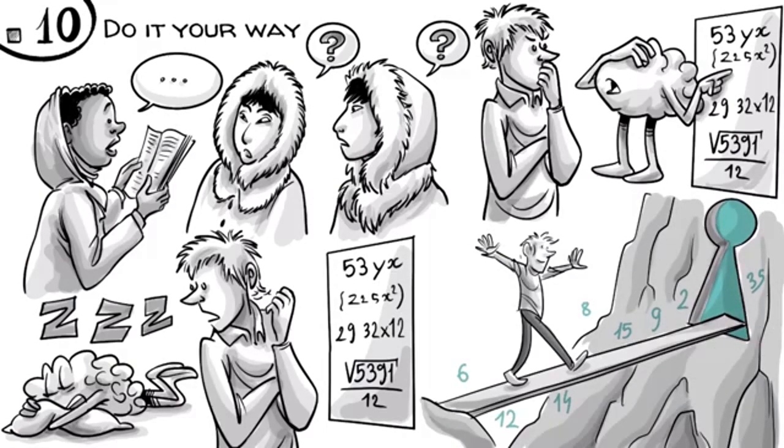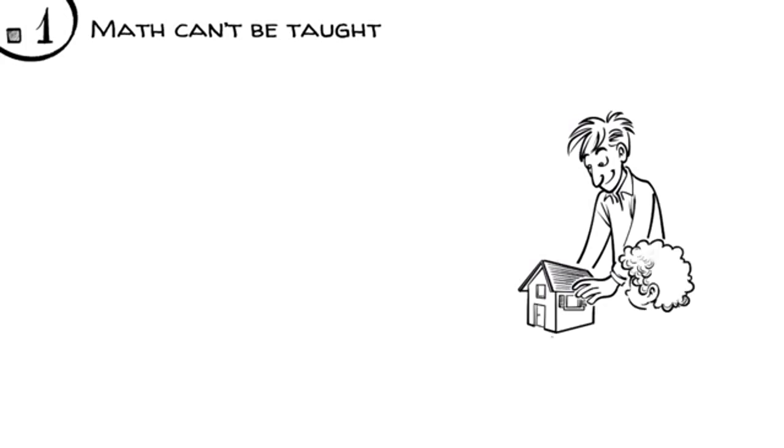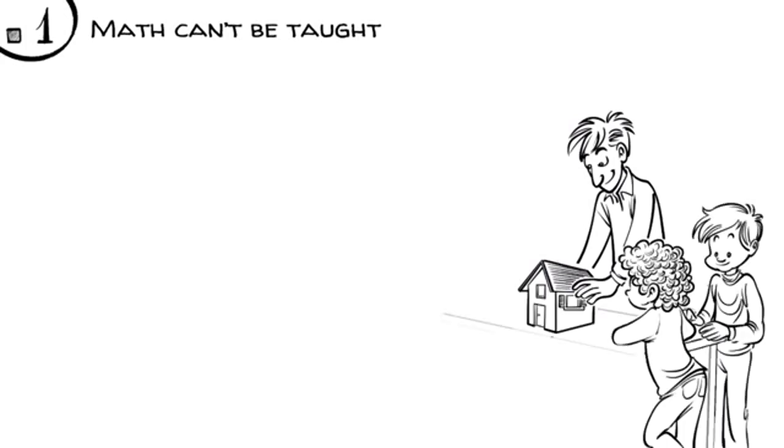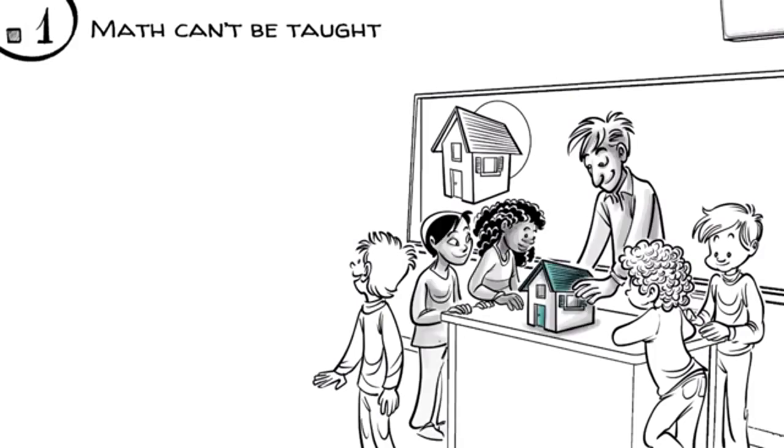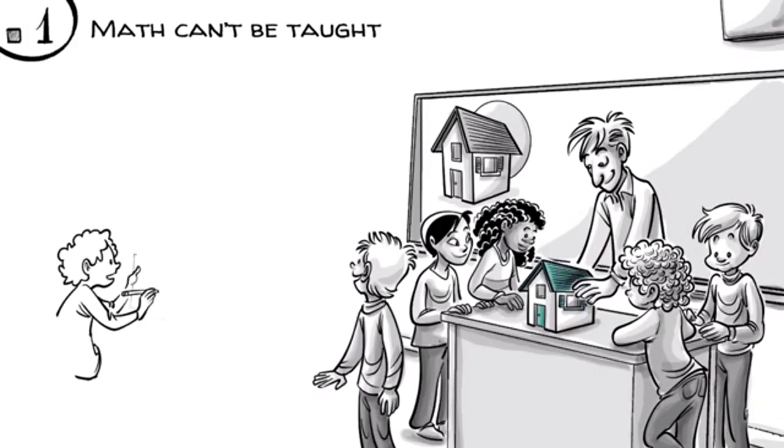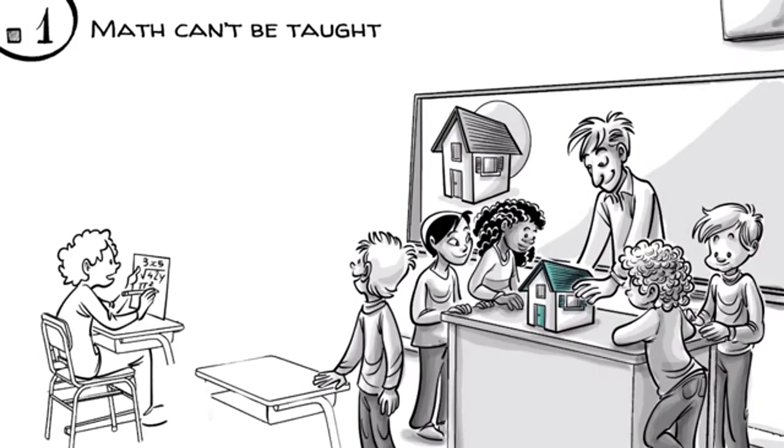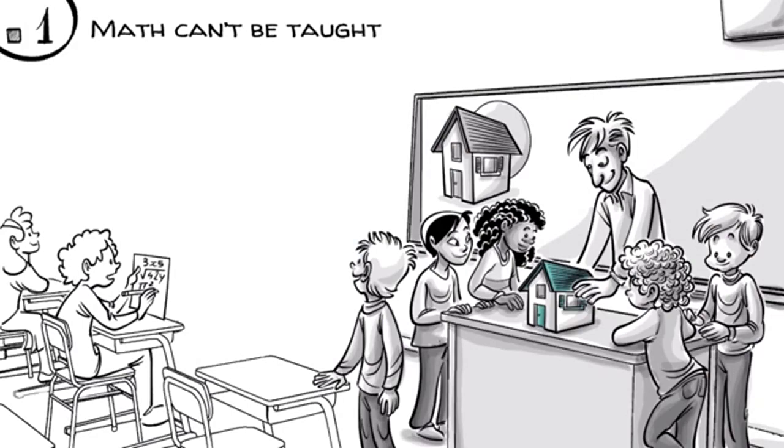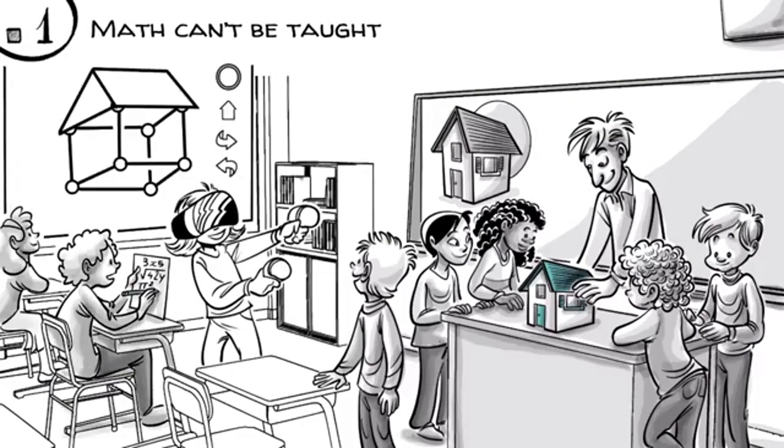Which brings us back to rule one. Math can't be taught. It has to be constructed. If we want to learn math, we have to do math in our heads, ideally with real-life experiences. Later, we replace the objects with abstractions, such as language, symbols or whatever the future might bring.